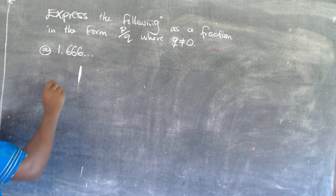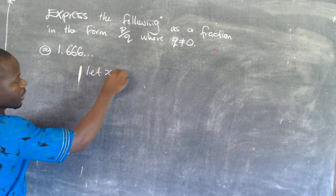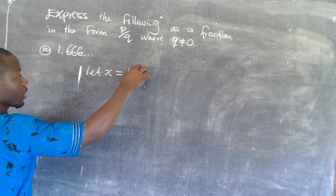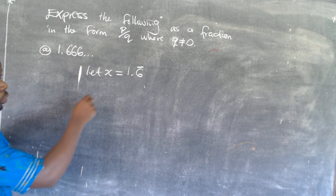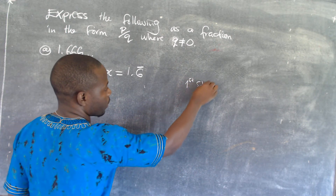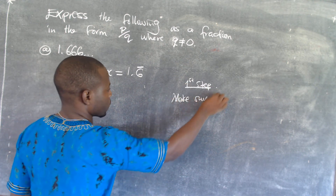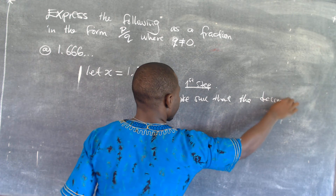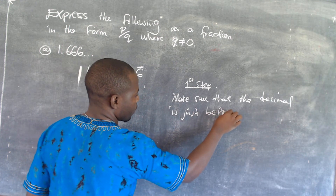Since 6 is repeating, what you are supposed to do is this: we are going to let x be equal to 1.6̄. The number that is repeating, you show a bar to indicate that this number is repeating. Once you do that, you can check the two steps. The first step: we are supposed to make sure that the decimal is just before the bar.